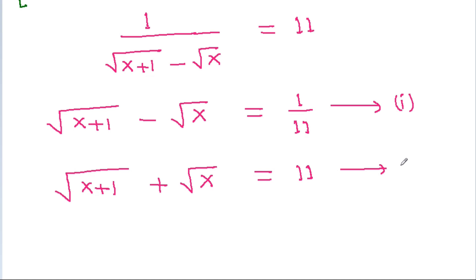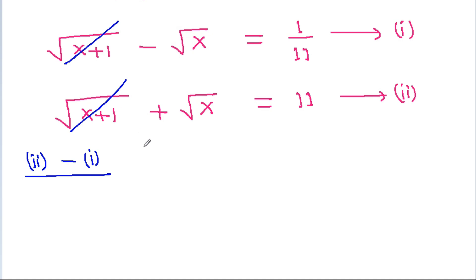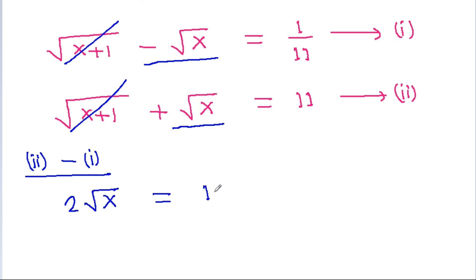Suppose this is equation 2. If we subtract equation 1 from equation 2, certain terms will get cancelled, and we can solve for the square root of x.